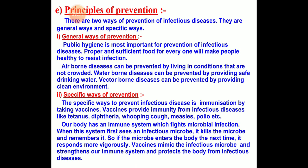The specific way of prevention means using a specific method to prevent infectious disease — by immunization, by taking a vaccine. Vaccines are chemicals given to a person in the form of injection. They provide immunity against infectious diseases like tetanus, diphtheria, whooping cough, measles, and polio. Our body has an immune system which fights microbial infection. When this system first sees an infectious microbe, it kills it and remembers it. If the microbe enters the body a second time, it responds more vigorously and the person will not get the disease. So vaccines strengthen our immune system and protect the body from infectious disease.